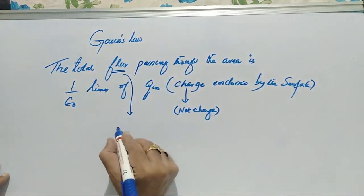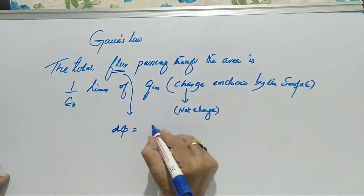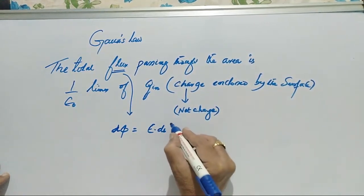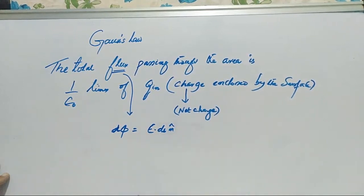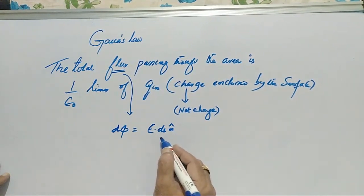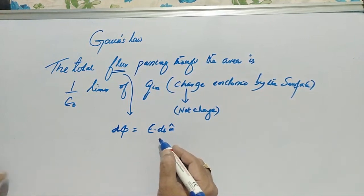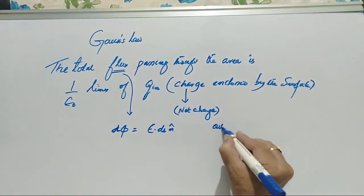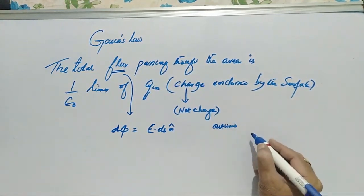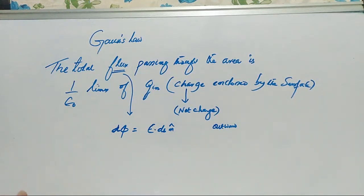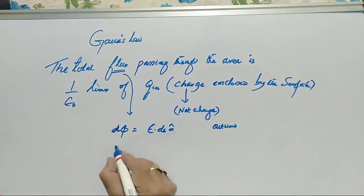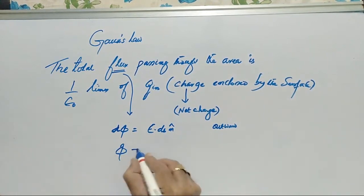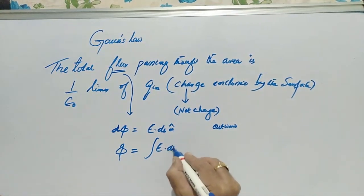In the last class we talked about electric flux. The electric flux dφ is equal to E·dS. If n-cap is the unit vector of the area vector, remember to involve the orientation we made the area a vector and gave the direction of the area as the outward normal. We had enough discussion with regard to electric flux, so we wrote dφ = E·dS. Now if you want to know the total flux, it is the integral of E·dS.